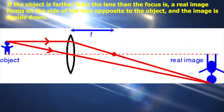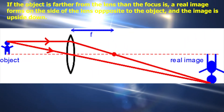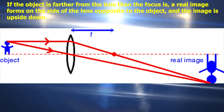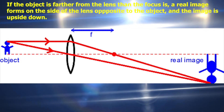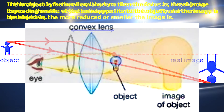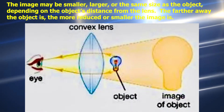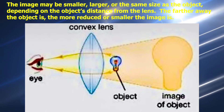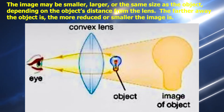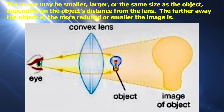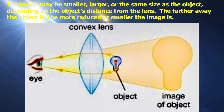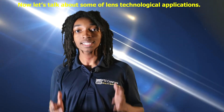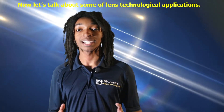If the object is farther from the lens than the focus is, a real image forms on the side of the lens opposite to the object, and the image is upside down. The image may be smaller, larger, or the same size as the object depending on the object's distance from the lens. The farther away the object is, the more reduced or smaller the image is. Now let's talk about some of the lens' technological applications.